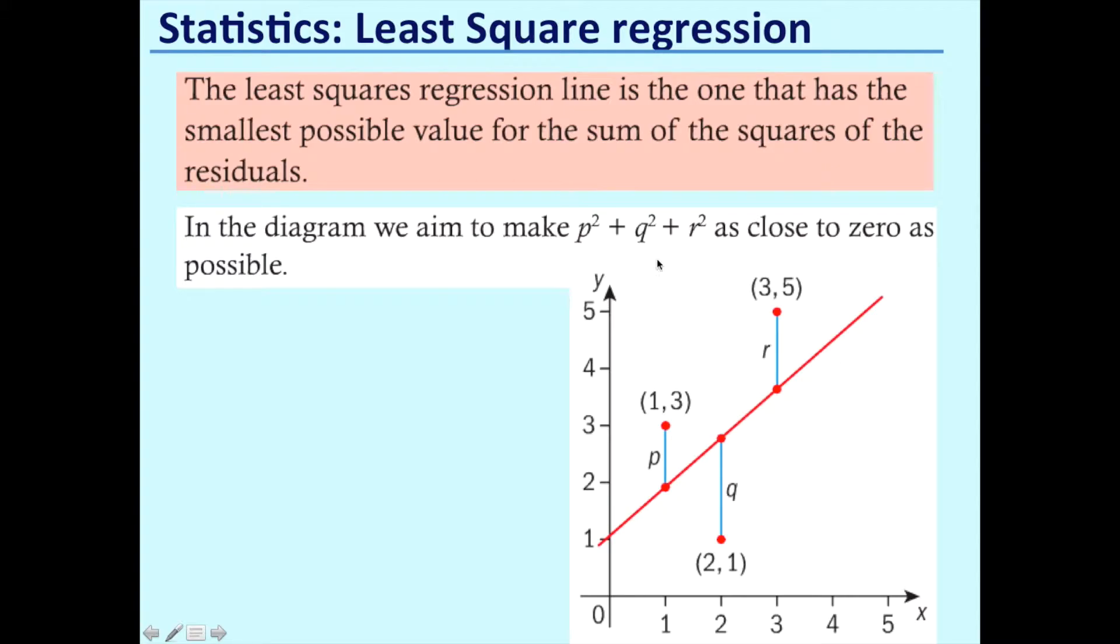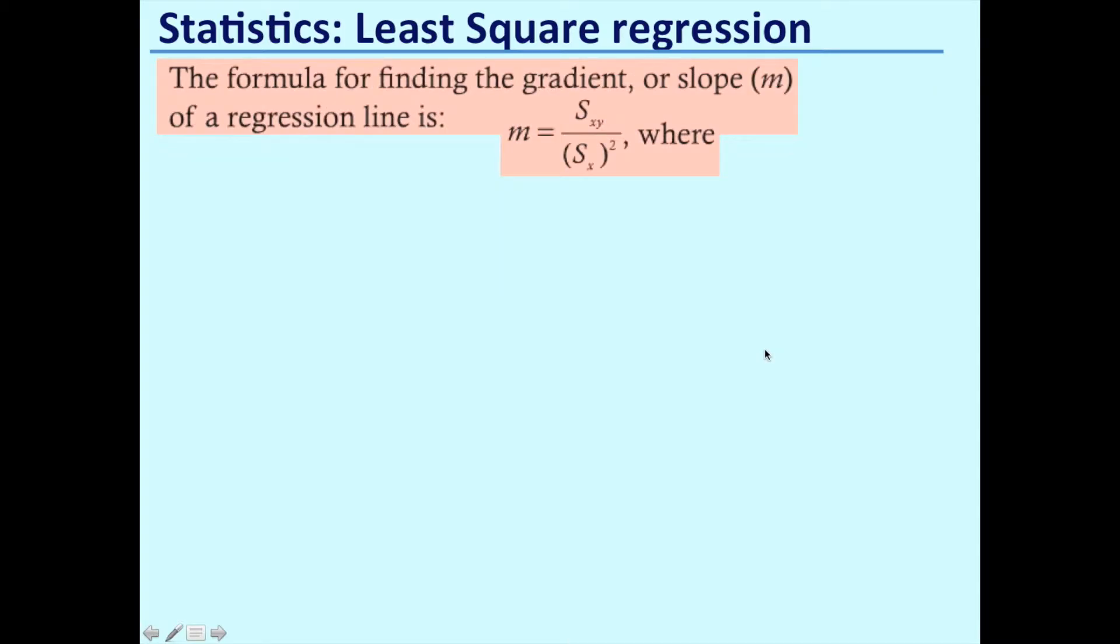Let's have a look at an example to put this in context. In this diagram we've got three points - P is here, Q is here, and R is here. These are the corresponding points according to the equation of this line. We can see there's a difference between each of these. What we want to do to draw the best line of best fit is to minimize or make the square of these distances as close to zero as possible.